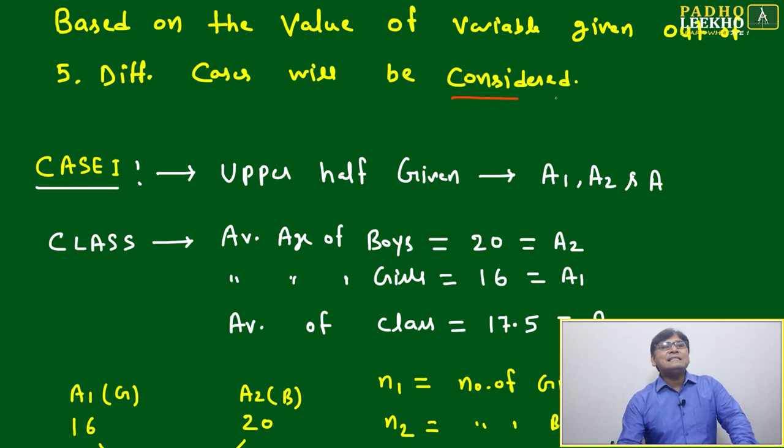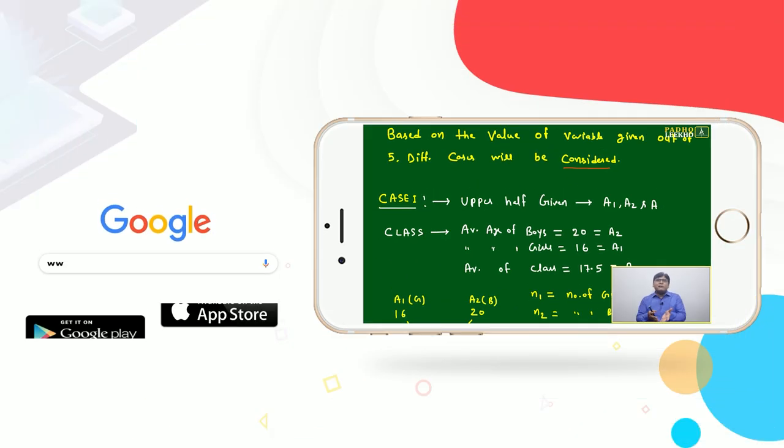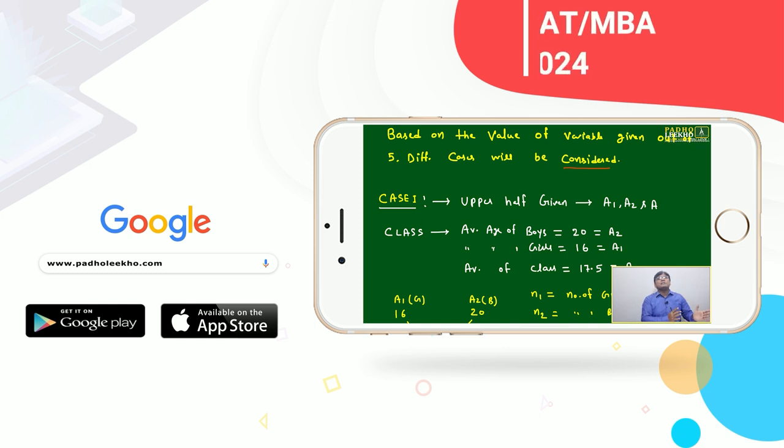Based on the value of variables given out, five different cases will be considered. These cases will be defined by which values are given. Maybe three are given and two we have to find, or four are given and one we have to find. Which three will be given? Maybe upper half, lower half, left side, or right side. Anything—a few data are given and a few we have to find. That will define different cases.